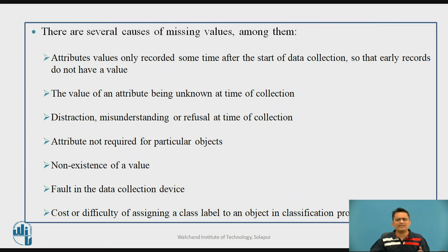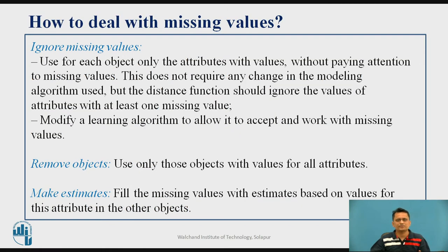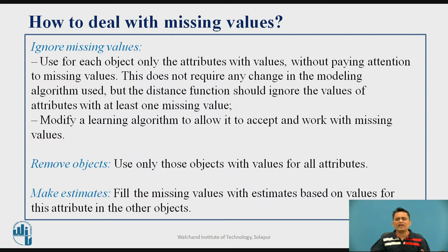If missing values are a problem, what is the solution? There are three approaches: first, ignore those missing values and don't consider them for the analytics part. Second, remove the object — if one instance has five attributes and one attribute value is missing, remove that entire instance from the analysis. Third, and more engineering-oriented, is to come up with an estimation of the missing value using some algorithm.